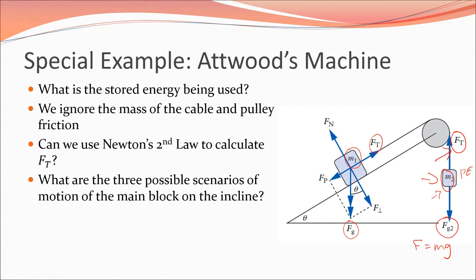There are three possible scenarios for the motion of the main block. The block could move down the incline if the tension force is less than the force parallel to the incline. It could move up the incline if the hanging mass force is larger than the force parallel to the incline. Or the block could remain at constant velocity if those two forces are equal — constant velocity means it stays still if stationary, or continues moving if already moving.